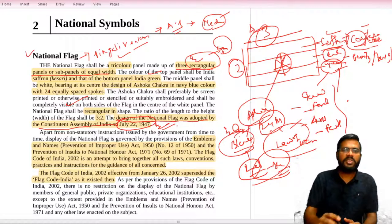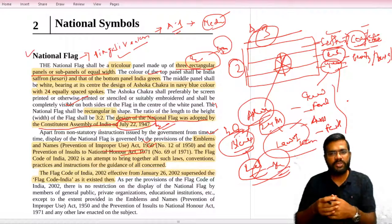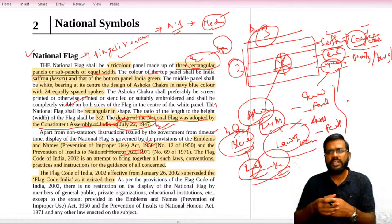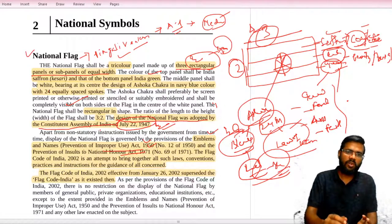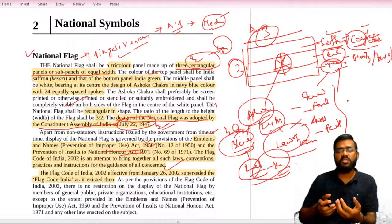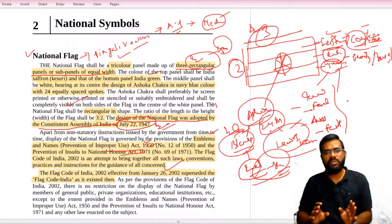Previously we had two acts: the Emblems and Names Prevention Act 1950, and the Prevention of Insults to National Honor Act 1971. There were many restrictions on in which situation we have to use the national flag, which time we have to use the national flag, in commercial establishments or private establishments. In the year 2002, there were restrictions on raising the flag for educational institutions, private institutions. Like governmental establishments, we have to mark respect for the national flag at any day of the year. This is a mark of respect.